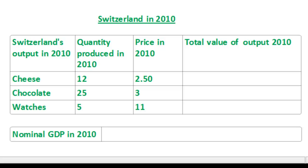As we can see in 2010, Switzerland's output of cheese and chocolate increased. Cheese increased from ten to twelve, so the quantity increased. Chocolate increased from twenty to twenty-five. And watches stayed the same — there was no change in the output of watches. But when we look at the price column, we can also see that prices increased for chocolate, cheese, and watches. In fact, prices rose for all three goods in 2010, so what we get is a nominal GDP figure which is inflated because of the higher price levels.